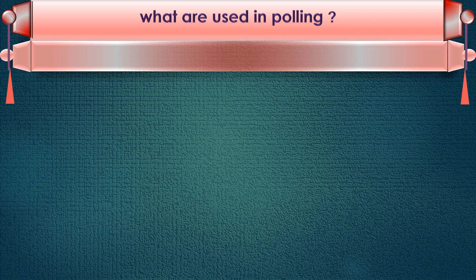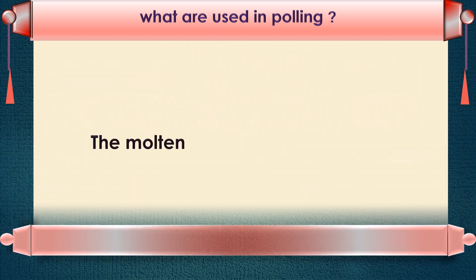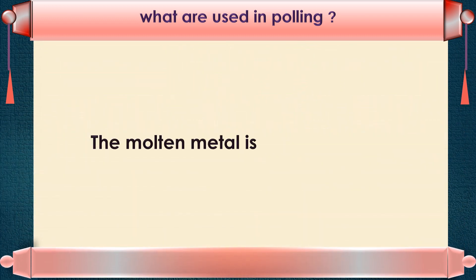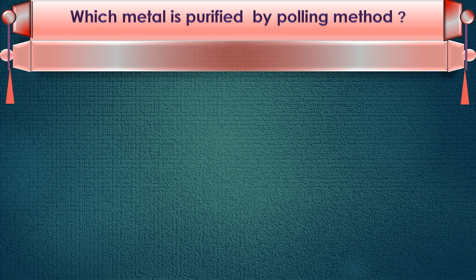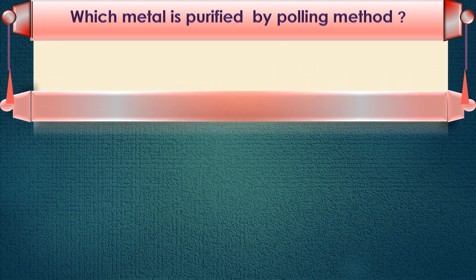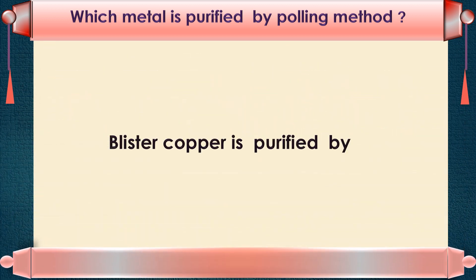What is used in poling? In poling, the molten metal is stirred with logs or poles of green wood. Which metal is purified by the poling method? Blister copper is purified by the poling method.